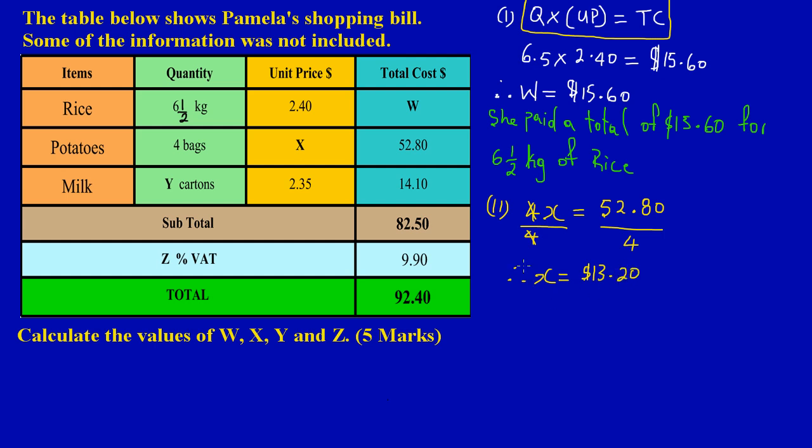So again, it's a worded problem, so we could use our statement. Pamela paid a total of $13.20 for, and remember it's a unit cost, so I have to say for each bag of potato. All right, so that's part two.